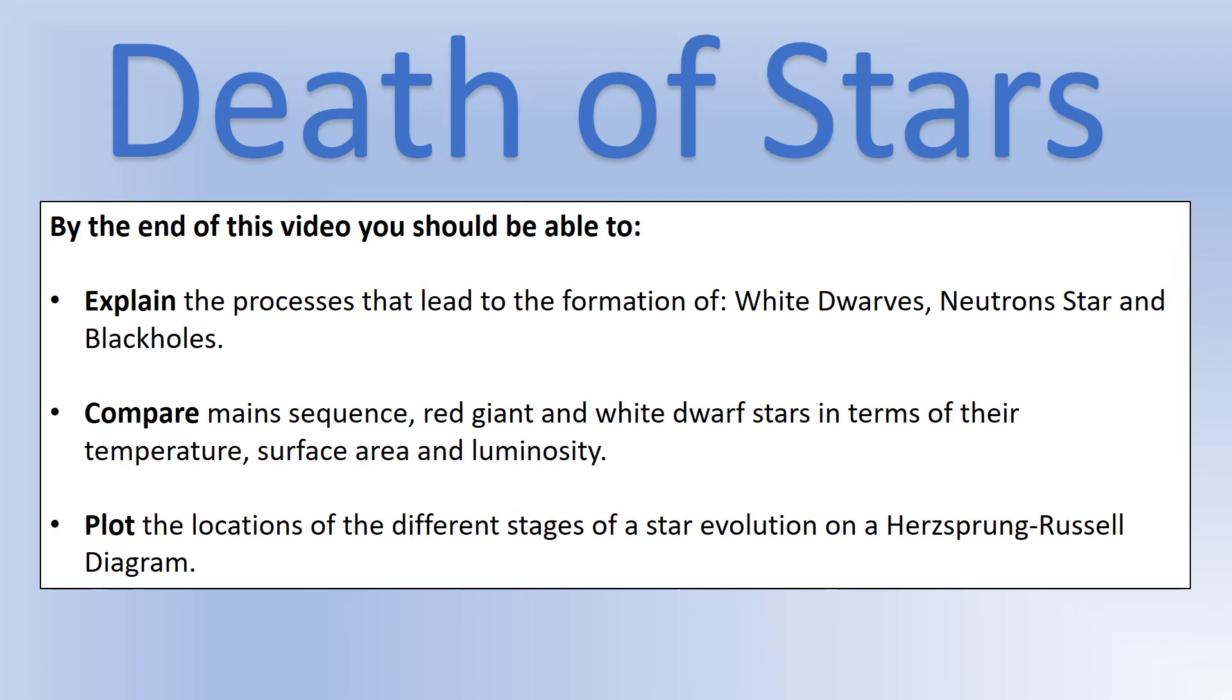In the previous video, I looked at how stars form and become what we call main sequence stars. Now what we're going to do is look at what happens when main sequence stars run out of their hydrogen fuel and start to form other stars like red giants, neutron stars, black holes, that kind of thing.